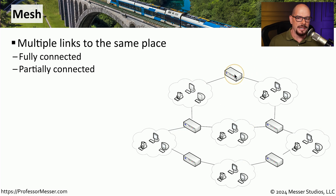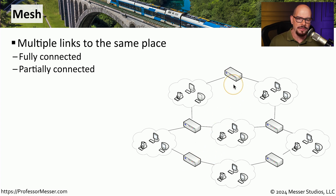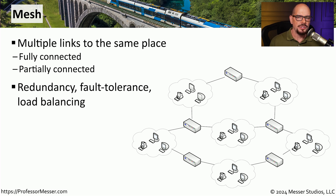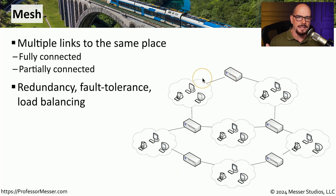A mesh network design is where one location or device connects to another location or device over more than one network connection. This means data might follow one path to get to a destination, or it may follow an alternate path. One reason we design a network this way is so that if one link in the mesh fails, we can use one of the other links to complete that communication. We might also perform load balancing over these links, where half the data is sent over one connection and the other half over a different connection.